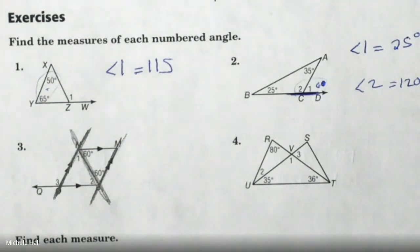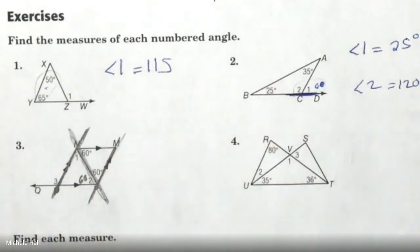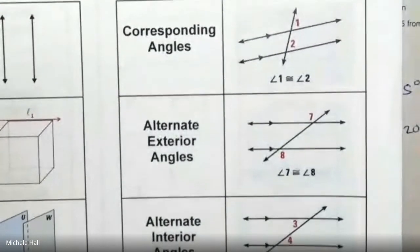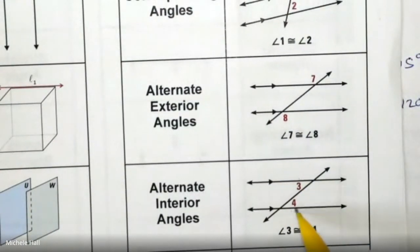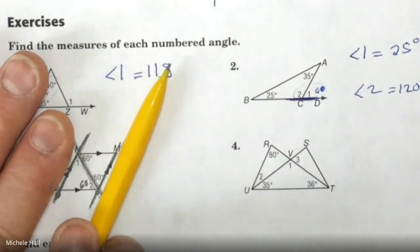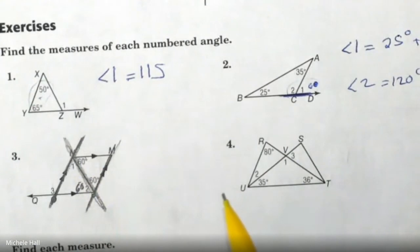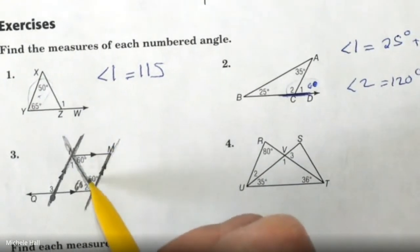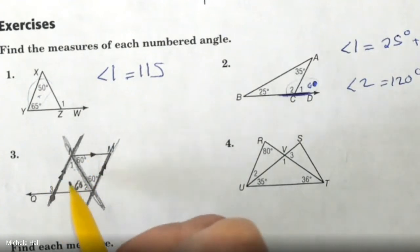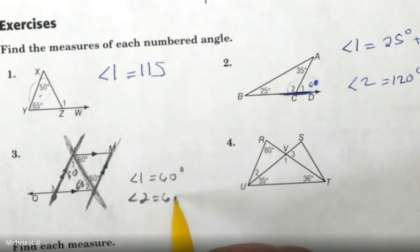What rule gives me angle 2? What rule tells me it's 60? Right here we have alternating interior angles — they're on the inside of the parallels and alternating on the transversal. So angle 1 is also alternating on the inside of the transversal. Angle 1 equals 60 degrees, angle 2 equals 60 degrees.